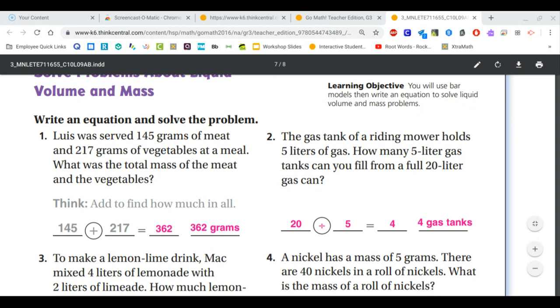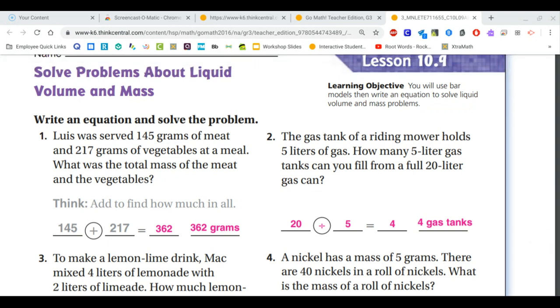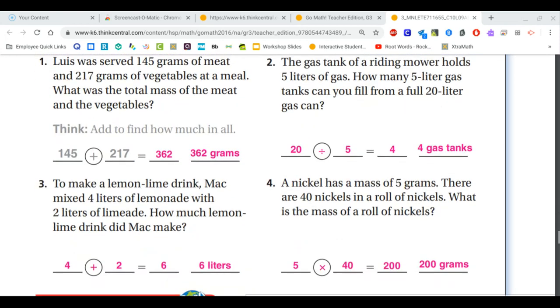For number two, we know that if one riding mower holds five liters of gas, and we want to know how many of those lawnmowers we can fill with a 20 liter gas can, we need to divide. And 20 divided by five is four. So it would be four gas tanks.